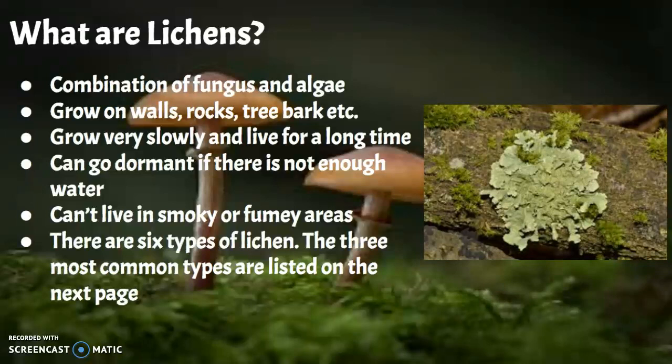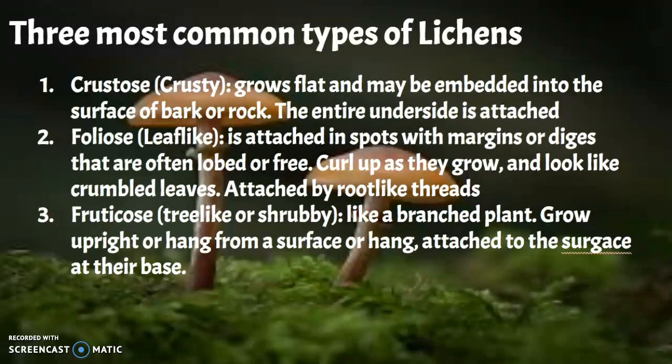The three most common types of lichen are: crustose, or crusty — grows flat and may be embedded into the surface of bark or rocks, with the entire underside attached. Foliose, leaf-like — attached in spots with margins that are often lobed or free. They curl up as they grow and look like crumbled leaves, attached by root-like threads.